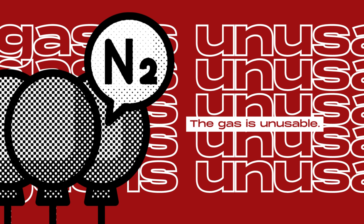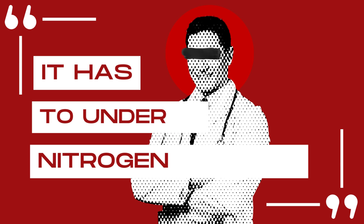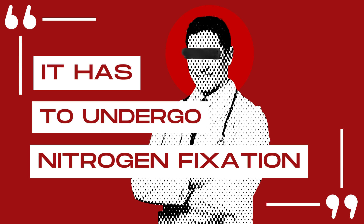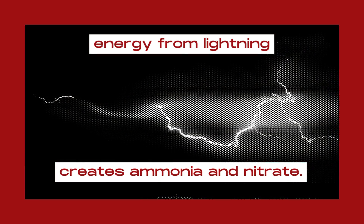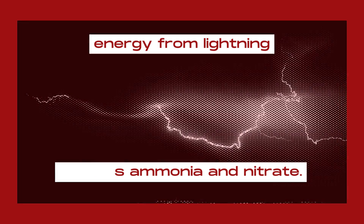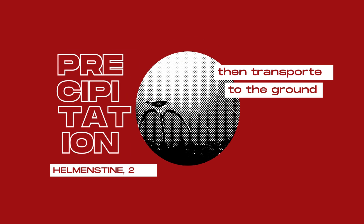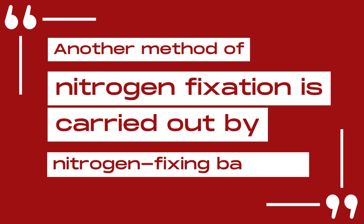Let us begin with atmospheric nitrogen. The gas itself is unusable for most biochemical processes of organisms. According to Dr. Harrison in his article for Vision Learning, for dinitrogen to be converted into its viable forms, it has to undergo nitrogen fixation. Through high-energy phenomena like lightning, energy from lightning causes nitrogen and water to combine and create ammonia and nitrates. These two are then transported to the ground by precipitation where plants can absorb them. Another method of nitrogen fixation is carried out by nitrogen-fixing bacteria, those that are present in the soil and in root nodules of some plants.